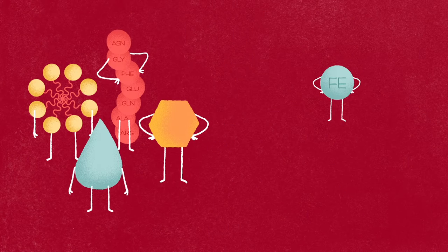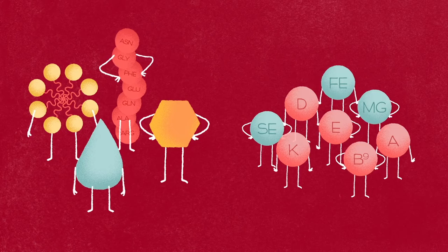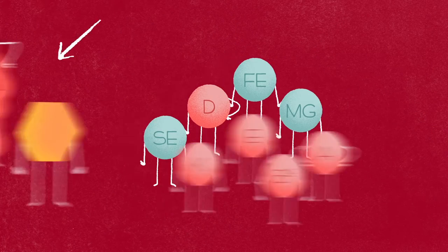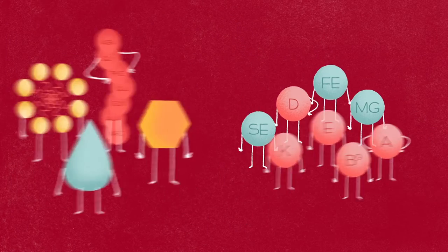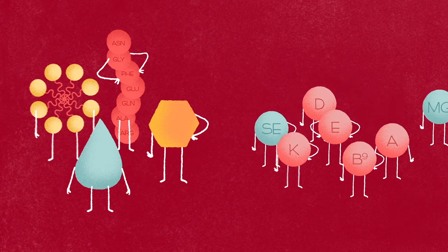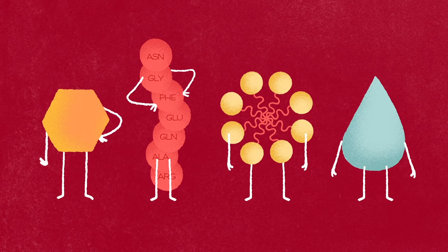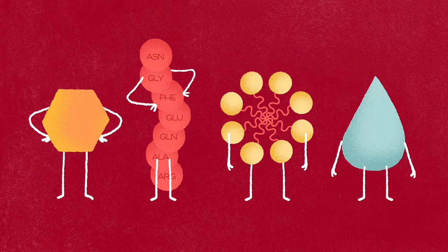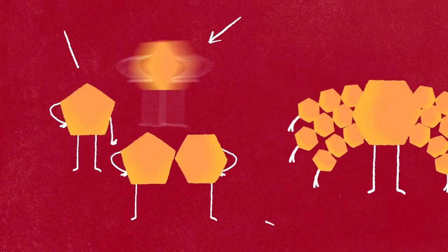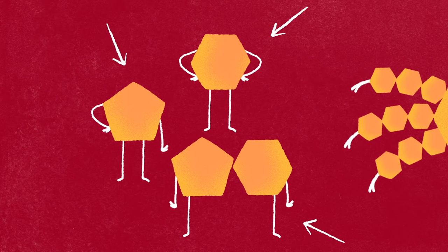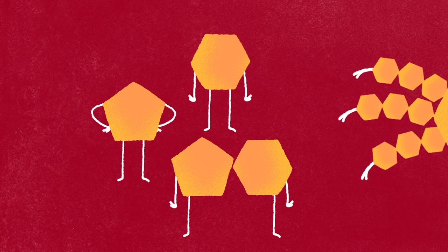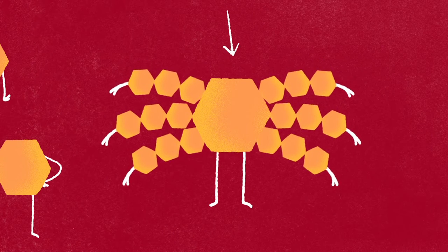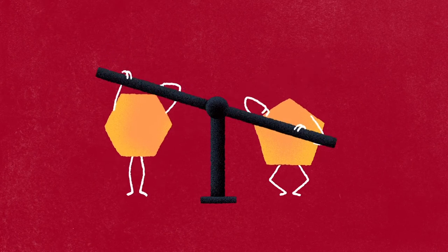Among the components of food, we usually distinguish between macro and micronutrients, and each has its own function. Macronutrients are carbohydrates, proteins, lipids and water. Carbohydrates are simple carbohydrates or sugars, such as glucose or fructose, and complex carbohydrates, such as starch. Their main role is to provide energy.